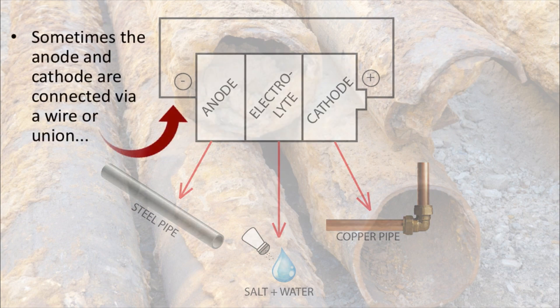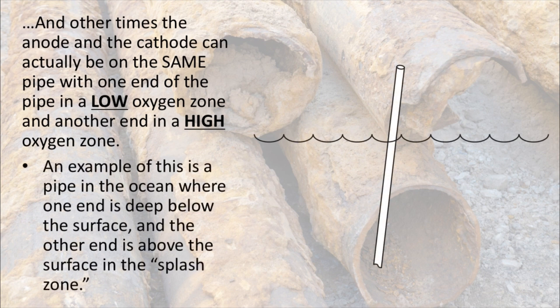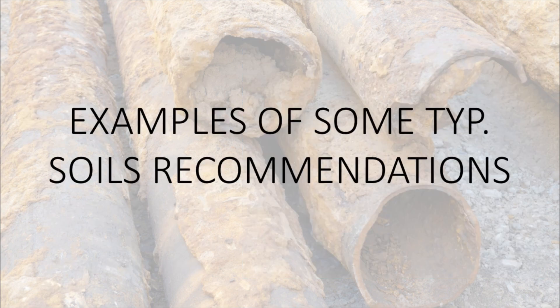Sometimes the anode and cathode are connected via a wire or union. Other times the anode and cathode can actually be on the same pipe, with one end in a low oxygen zone and the other in a high oxygen zone. An example of this is a pipe in the ocean where one end is deep below the surface and the other is high above the surface in the splash zone.